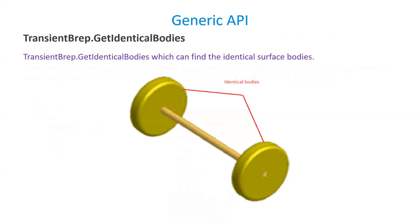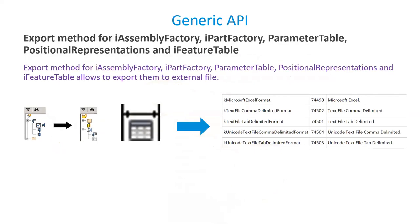A new method called Get Identical Bodies is introduced to identify the identical bodies in the Transient BRep object. The existing Export method is extended to extract tables from iAssembly Factory, iPart Factory parameter table, positional representation, and iFeature table into external files like Excel, text file, etc.